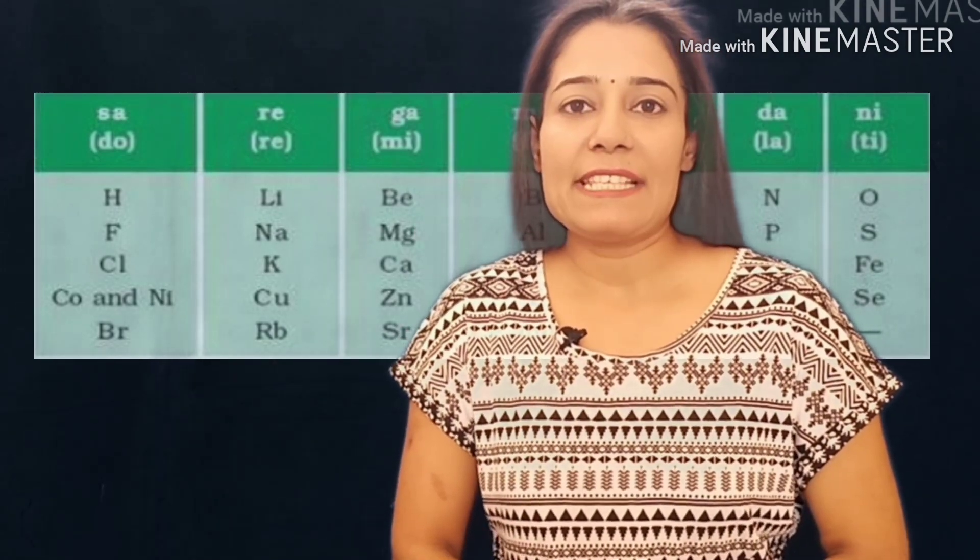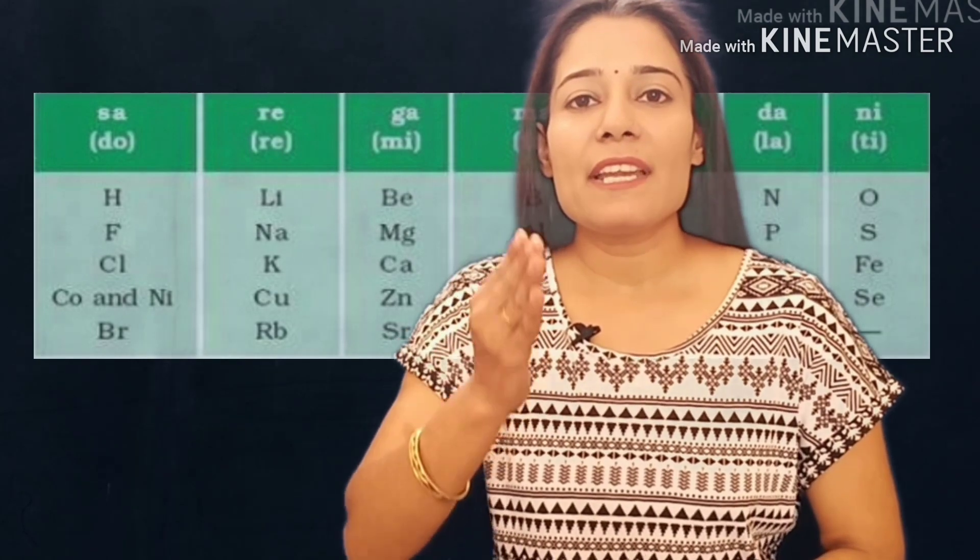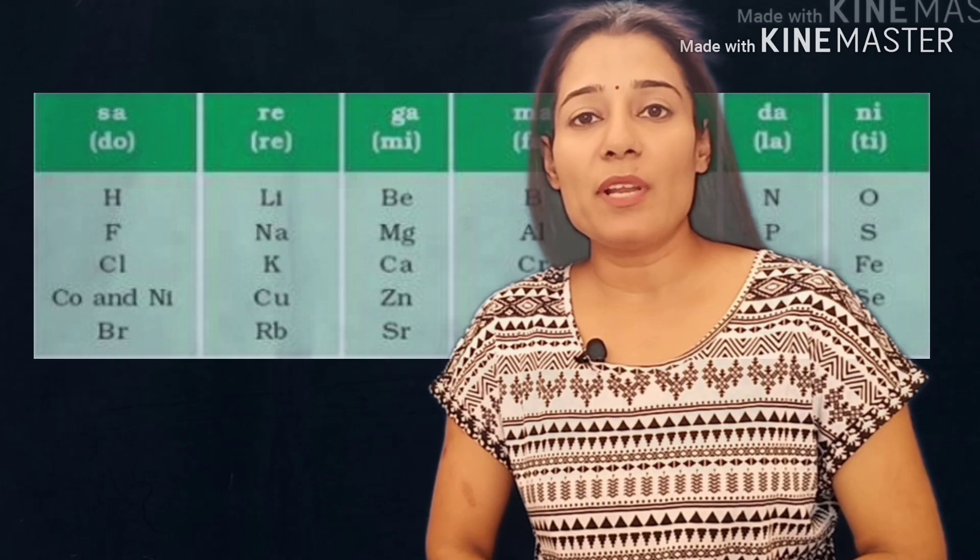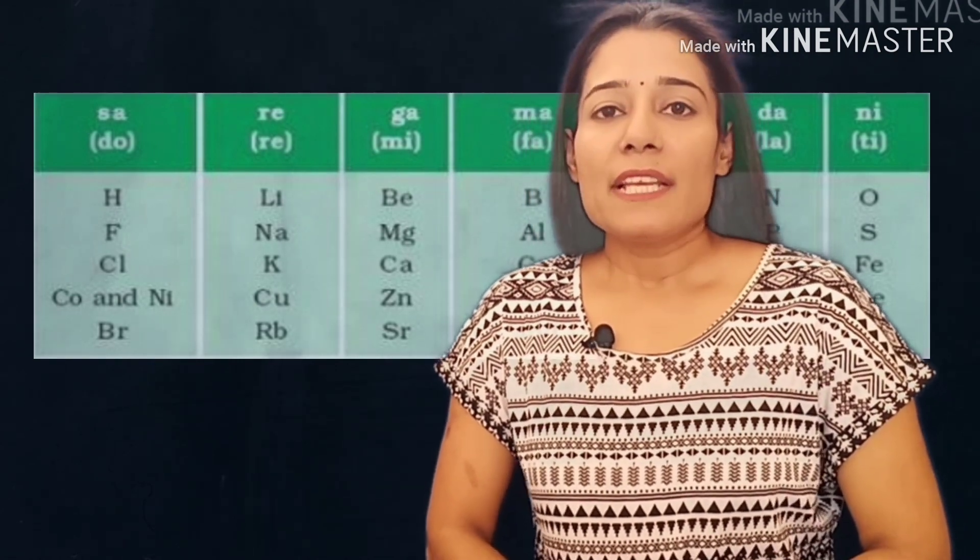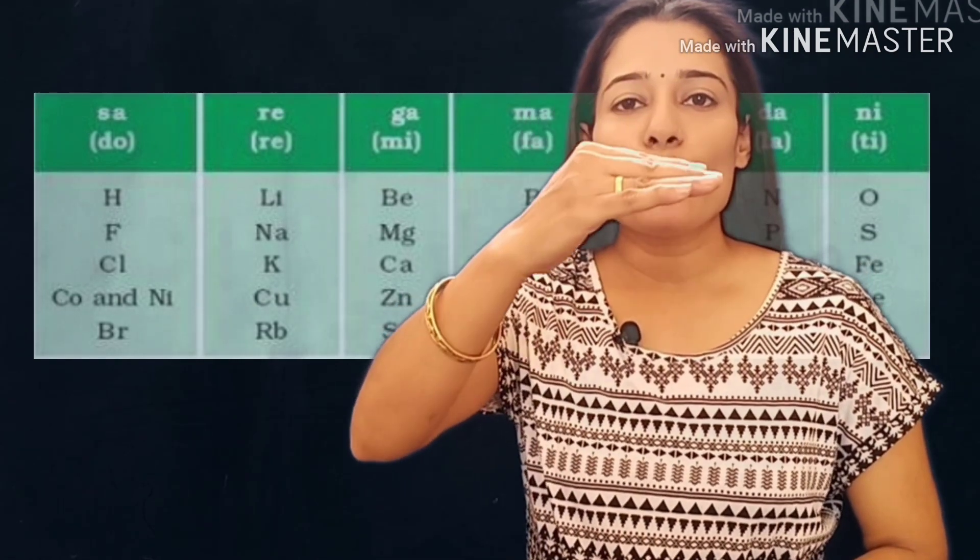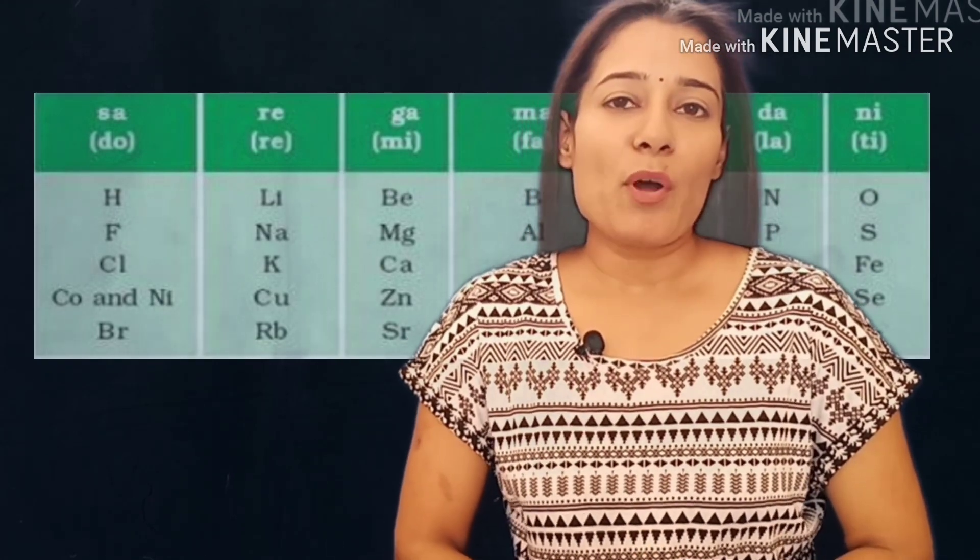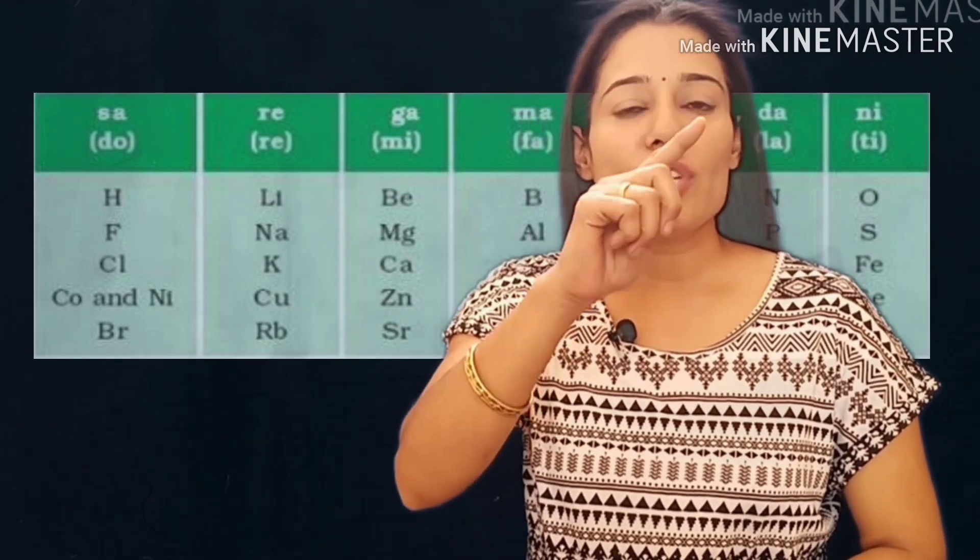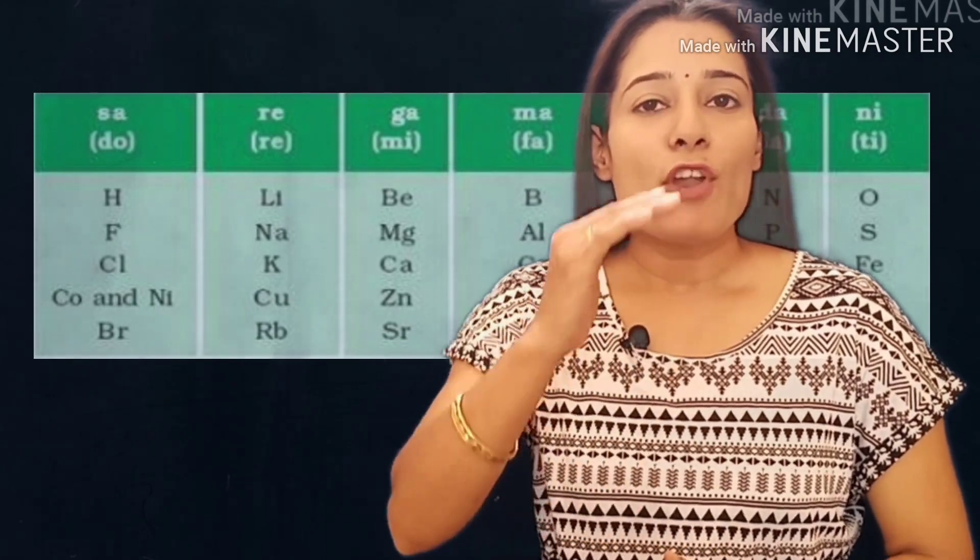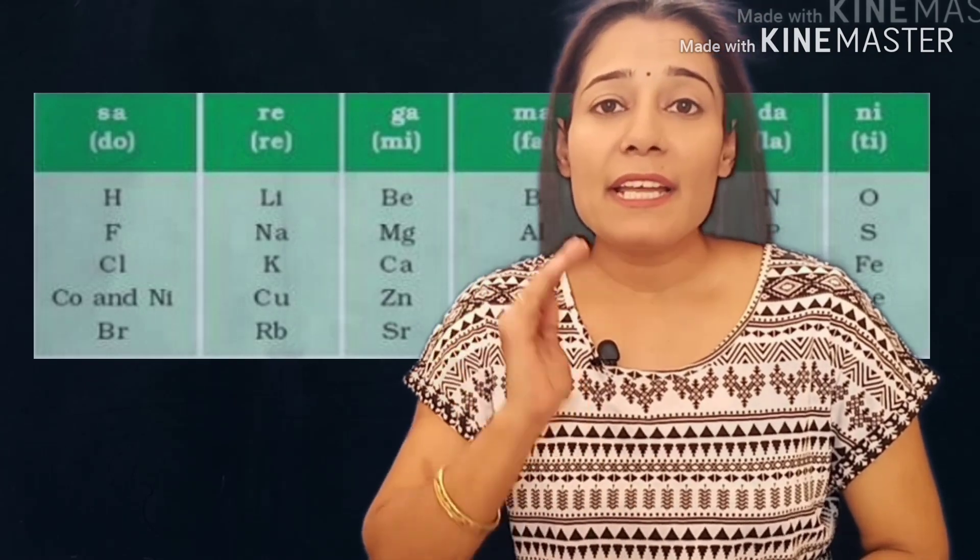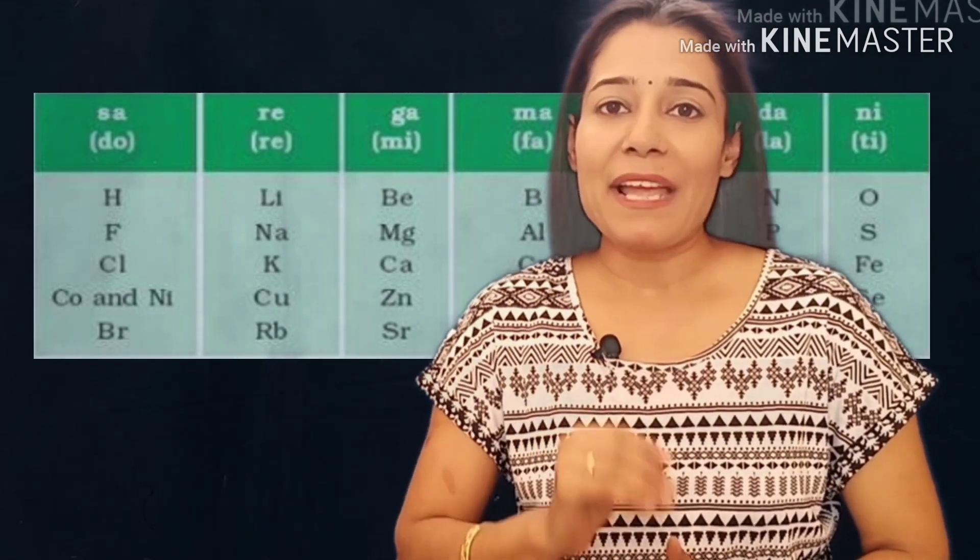Newlands strongly emphasized that all the elements in a group possess similar properties. Let's take first group of Newlands' classification table as an example. This group contains Hydrogen, Fluorine, Chlorine, Cobalt, Nickel and Bromine. Let's discuss about their properties. Hydrogen is gaseous in nature. Fluorine and Chlorine are Halogens but strongly non-metals. On the other hand cobalt and nickel are metals.